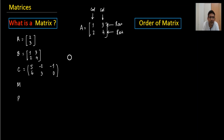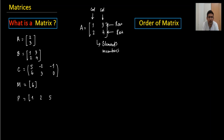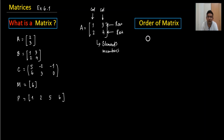The entries inside a matrix are called elements or members. A matrix can also have just a single element, like the number 6 written alone, or a row matrix like [1, 2, 5]. Now, when talking about Exercise 6.1, the key topic is the order of a matrix. The order of any particular matrix is always equal to rows multiplied by columns.